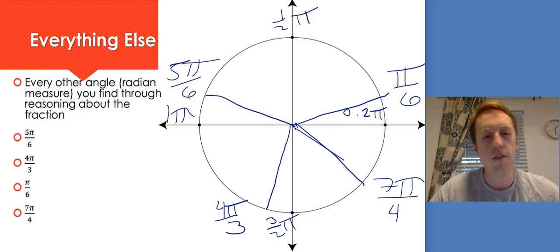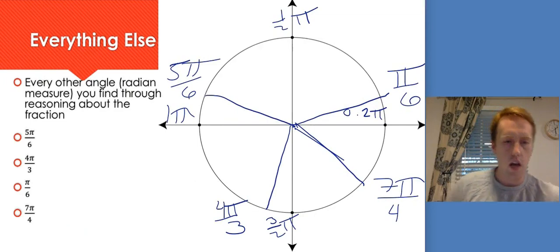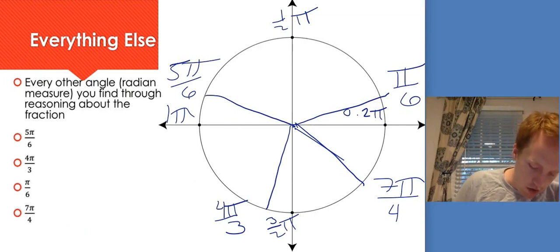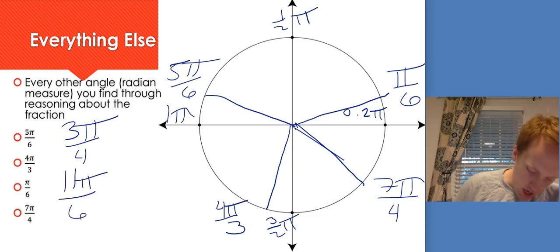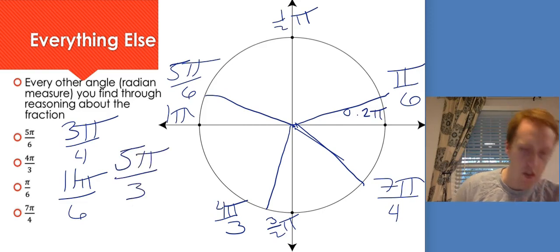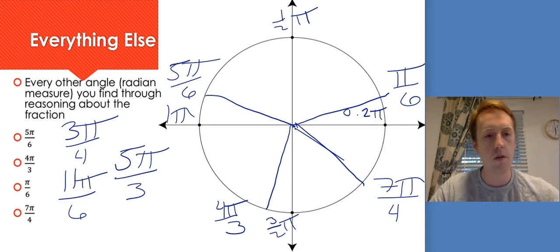I know that goes by fast, so let me give you a couple to try on your own: 3π/4, 11π/6, and 5π/3. Go through and find where those are on the unit circle. Just Google the unit circle so you can check your answers.